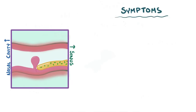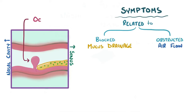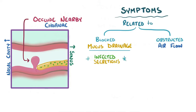The symptoms of nasal polyps are usually related to blocked mucus drainage and obstructed airflow. As the polyps grow, they occlude the nearby choana and block sinus mucus drainage. This can leave the sinuses full of secretions that get infected, causing bouts of fevers and headaches.